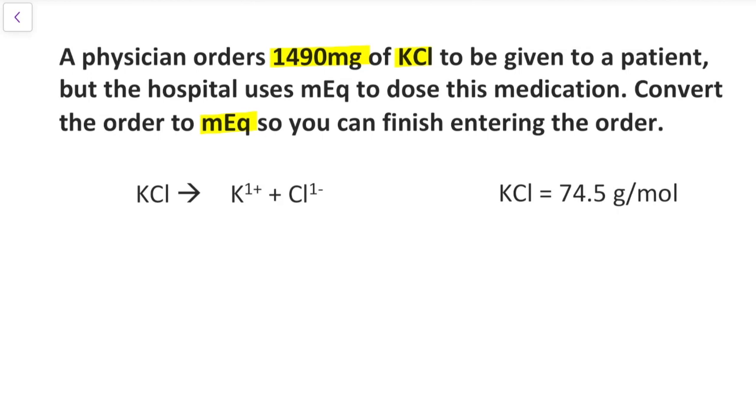Now let's determine the valence. Potassium chloride dissociates into one ion of potassium, which has a charge of positive one, and one ion of chloride, which has a charge of negative one. If we multiply each of these, we get a valence of one.